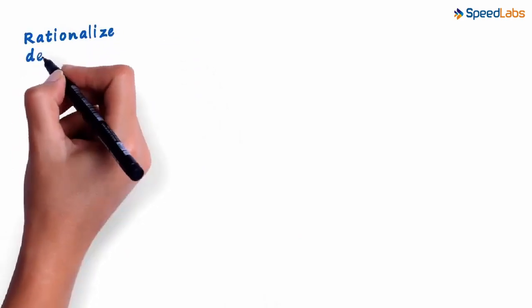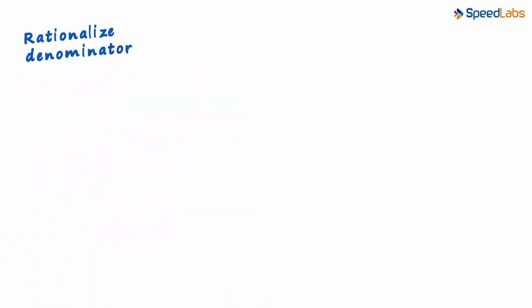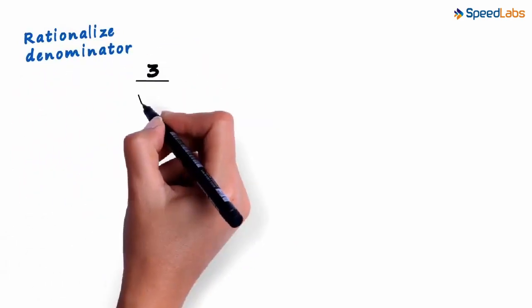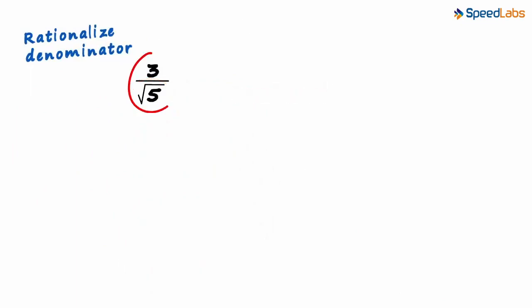Let's look at a couple of examples in which we need to rationalize the denominator. Here's our first example: 3 divided by √5. The denominator √5 is irrational, and to get this in standard form we need to make the denominator rational.